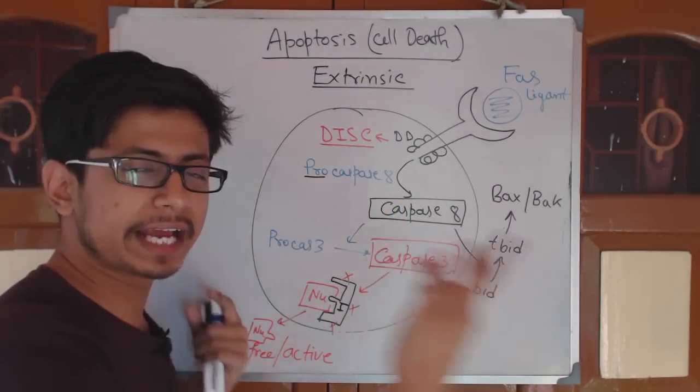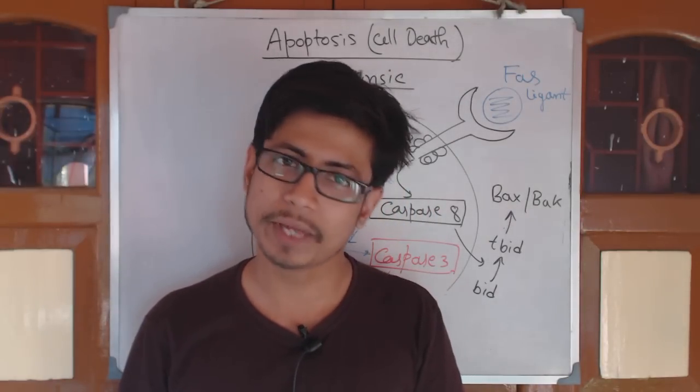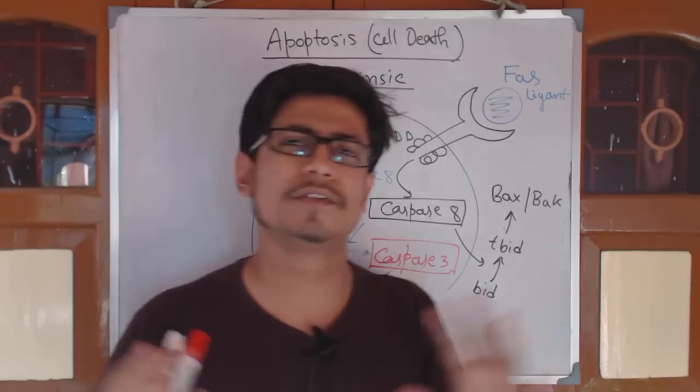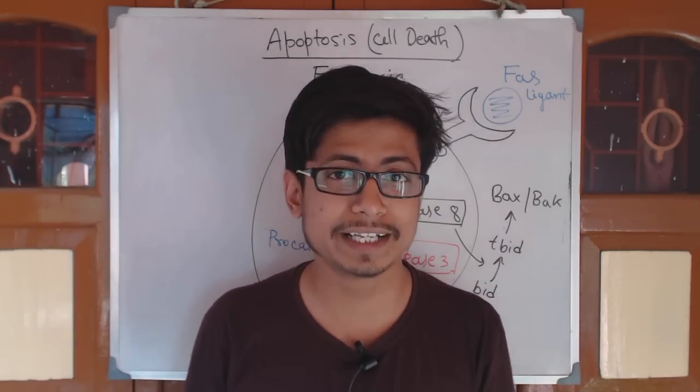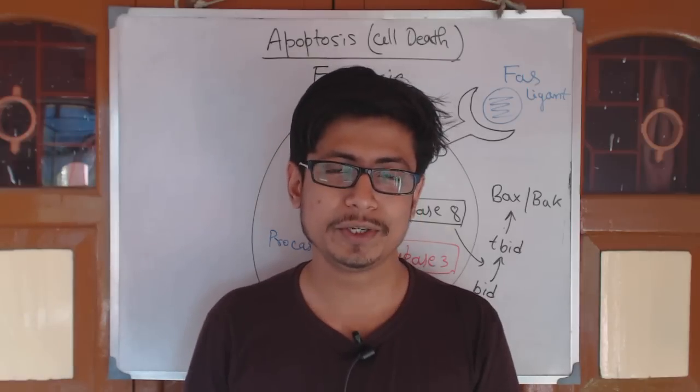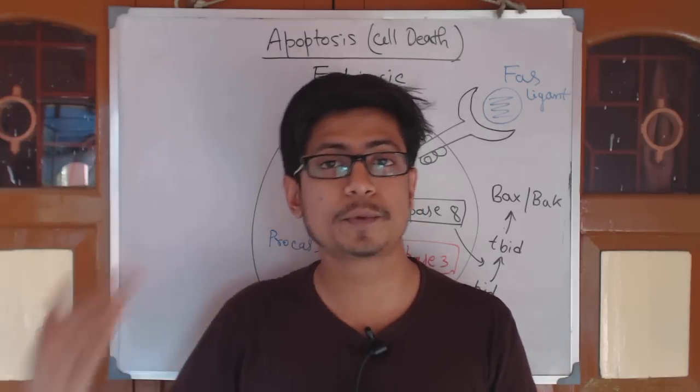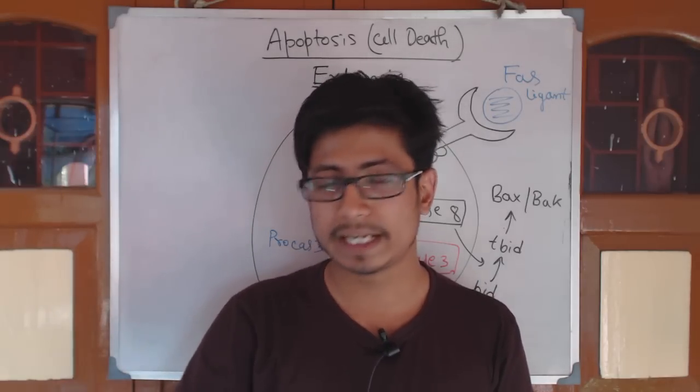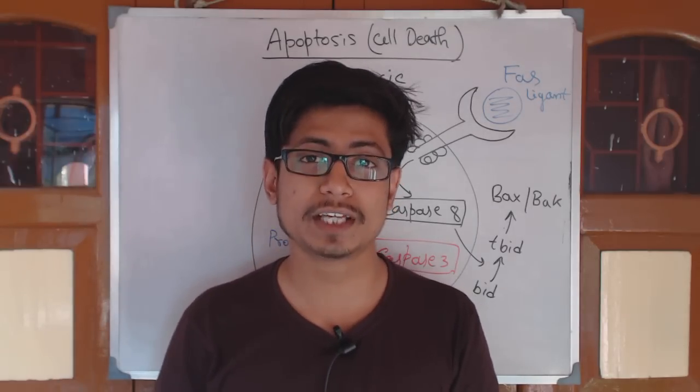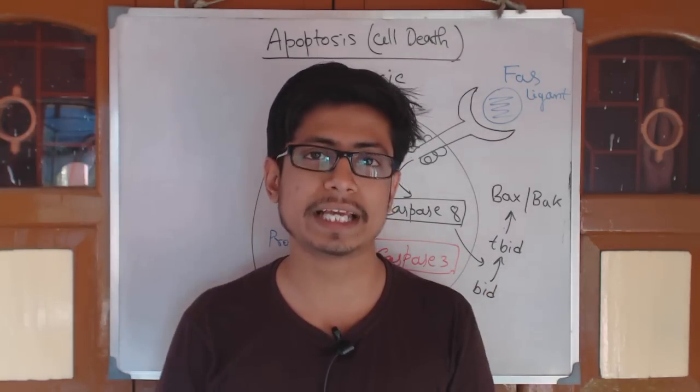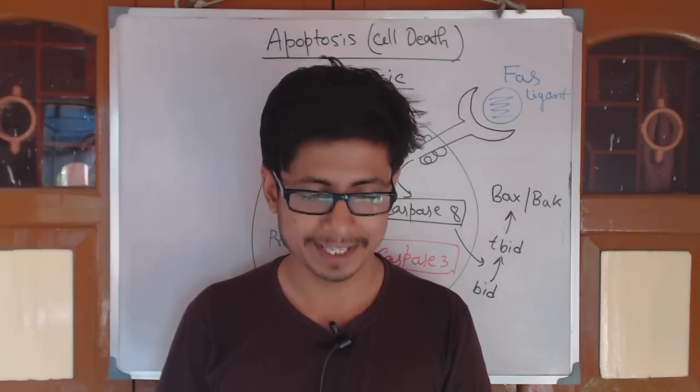Once the nuclease is active, every nucleic acid will be cleaved and the cell will eventually die. This is the big picture and overview of the extrinsic pathway of apoptosis. This is how programmed cell death takes place. If you like this video, please hit the like button and the subscribe button. Look at all the apoptosis videos in my channel by clicking the links in the description. Subscribe to my channel to get more videos like this and better understanding of molecular biology. Thank you.